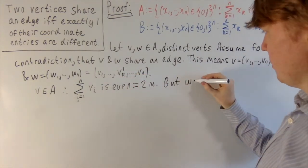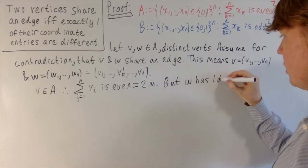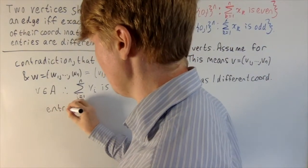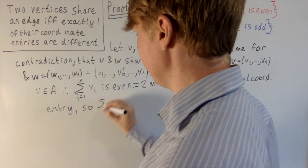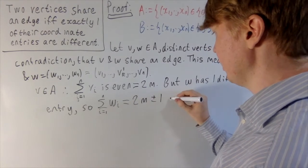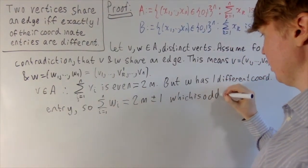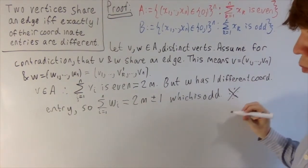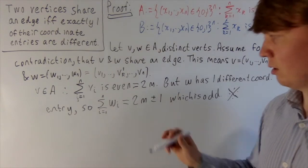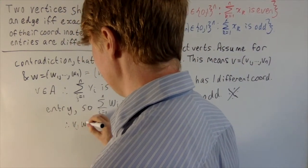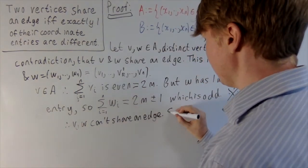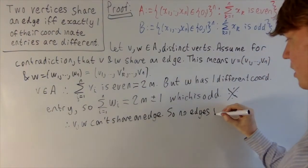But W has exactly one different coordinate entry from V, changed either from 0 to 1 or from 1 to 0. So the sum from i=1 to n of Wᵢ equals 2m ± 1, which is odd. This is a contradiction, since W is supposed to be in A. Therefore, V and W cannot share an edge, so there are no edges between vertices in A.